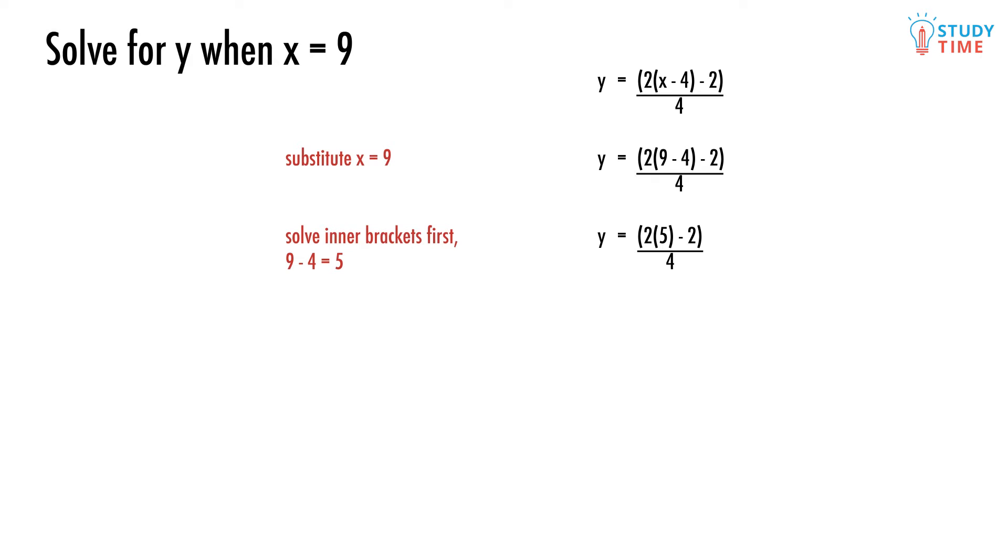Then the outer set of brackets using our new value of 5 for the inner brackets. We have both multiply by 2 and subtract 2 in the outer brackets. Which first in BEDMAS? Multiplication comes before subtraction, so 2 times 5 is 10. Great. And then 10 minus 2 equals 8. So the top part of our fraction is equal to 8.